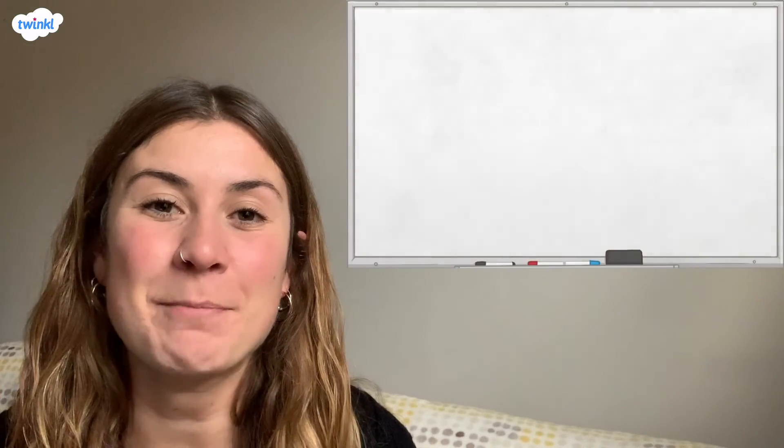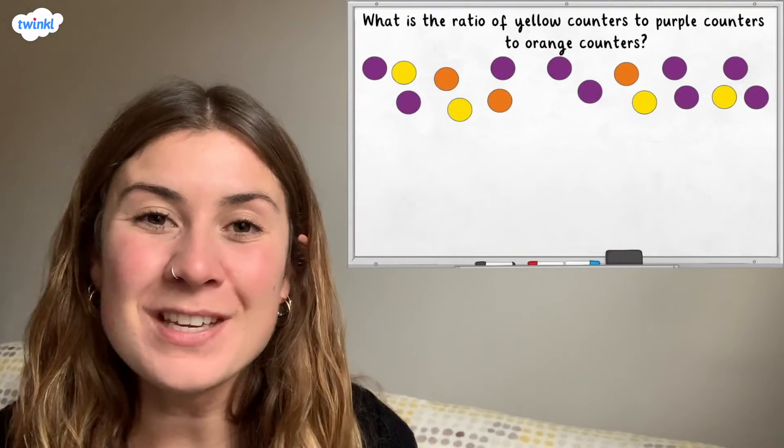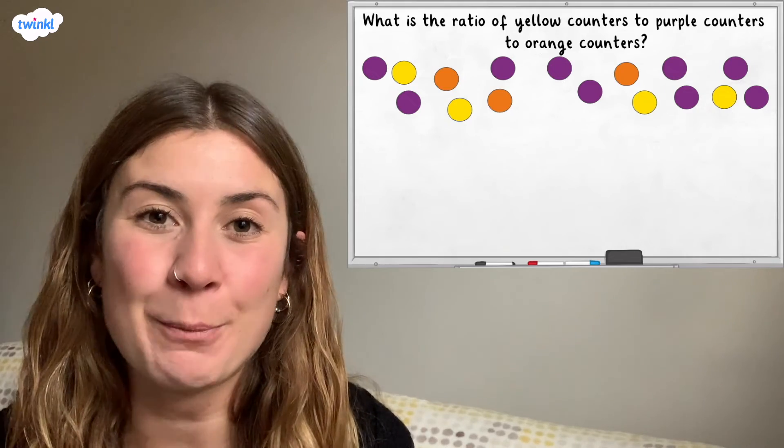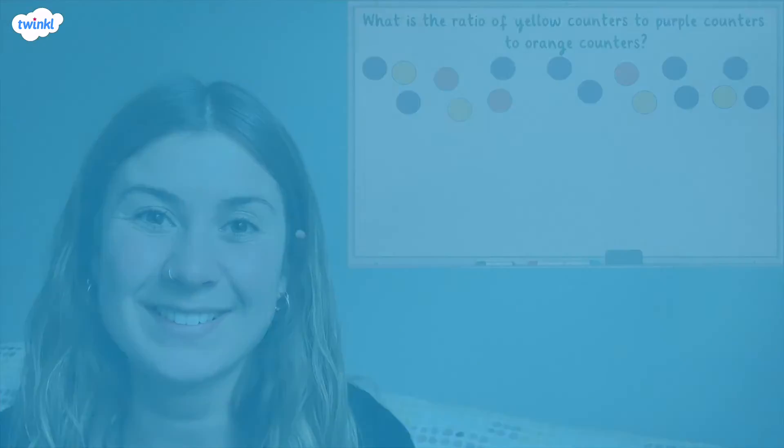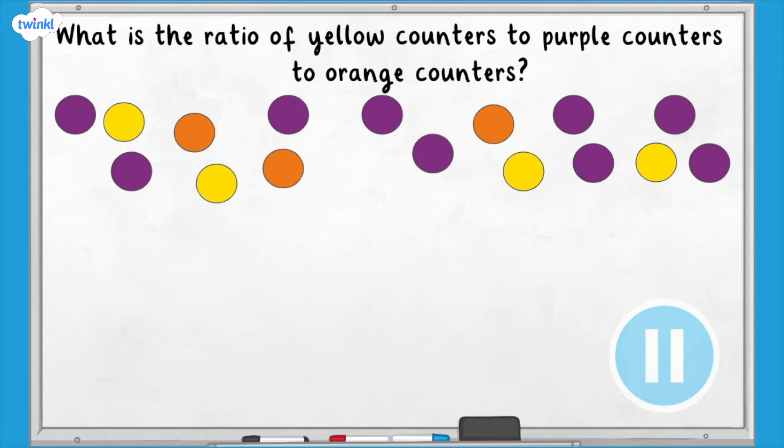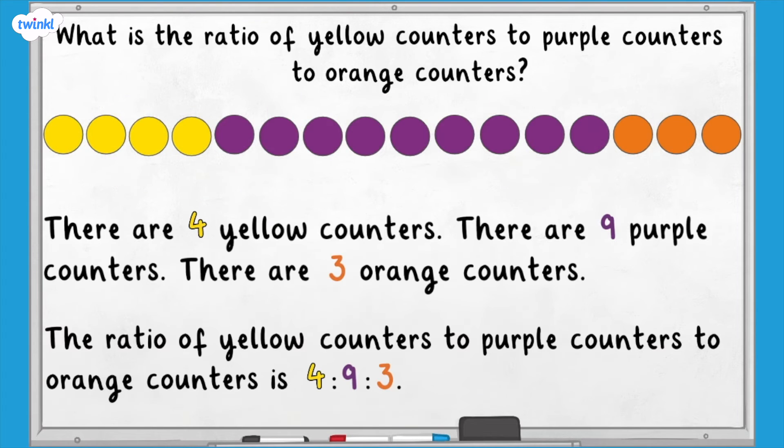Some yellow counters have been added to the group. What is the ratio of yellow to purple to orange counters now? The ratio of yellow counters to purple counters to orange counters is four to nine to three. Four, nine and three don't share any factors except one, so we can't divide them all by the same number and get a whole number answer. Therefore, we can't simplify this ratio any further.